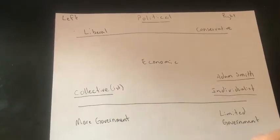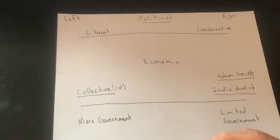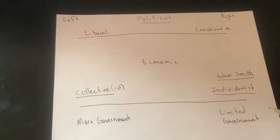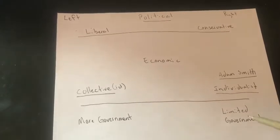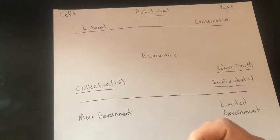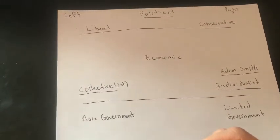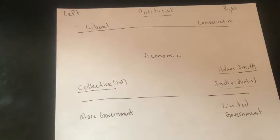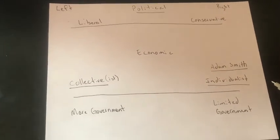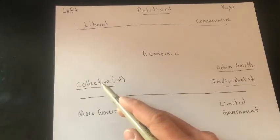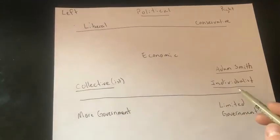Both sides actually believe very much in freedom and equality of opportunity. Individualists believe that equality of opportunity is given when we are more free from the government. Collectivists believe that we are more free and equal when the government steps in and provides help to make things equal for all of us. Your assignment today is to analyze a bunch of different examples and decide whether those examples are more collectivist or more individualist.